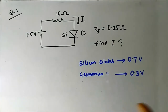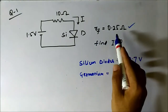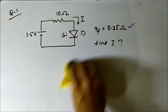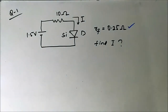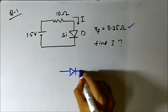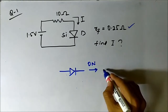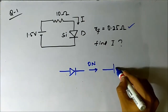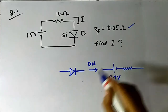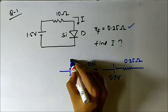We are also given that the forward resistance — the diode resistance — is 0.25 ohm. The equivalent circuit representation of this silicon diode, only when it is on, is a voltage source of 0.7 volt in series with a resistance of 0.25 ohm.